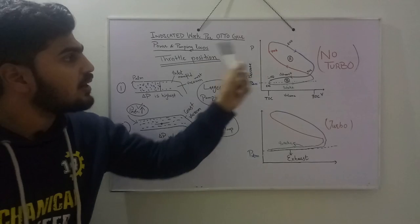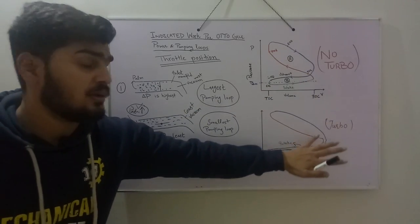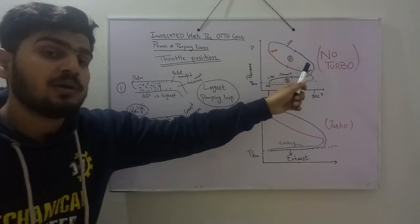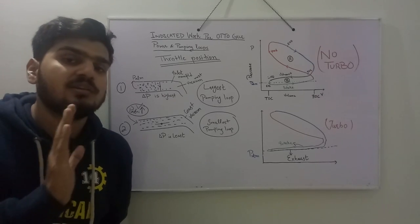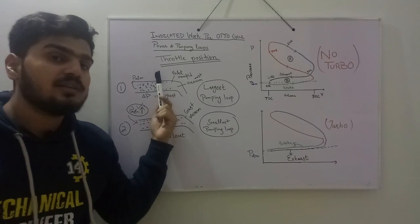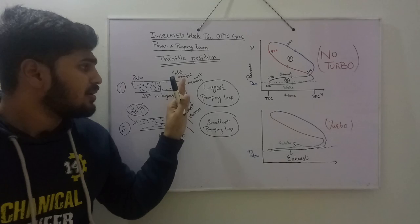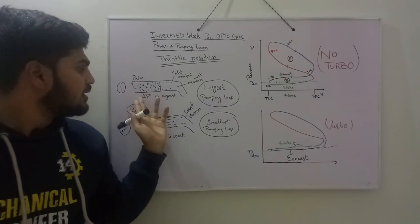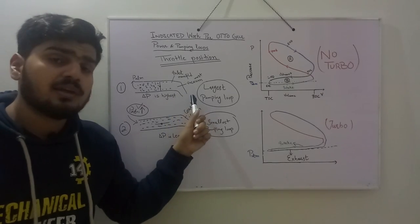There are two major cases: a naturally aspirated engine and a turbocharged or supercharged engine. In a naturally aspirated engine there are various throttle positions. When the throttle is fully closed or near closed, the inlet manifold pressure is at maximum vacuum, and the air-fuel mixture enters near atmospheric pressure, so the pressure difference is maximum and there is a strong vacuum in the intake manifold.